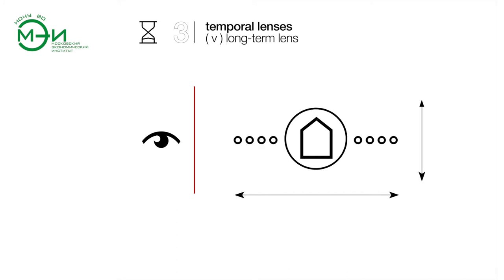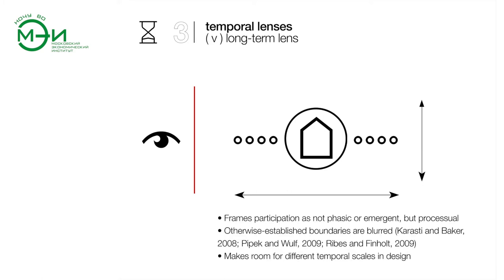Finally, the long-term lens stretches the view of participation — looking back, forward, and to the present — taking into account both the past and the future in the present. This view frames participation as not strictly phasic or emergent, but perceptual, whereby otherwise established boundaries are blurred between design use, implementation, maintenance, redesign, and repair. Whilst this lens represents arguably the biggest research gap of all five lenses owing to its scale and only recent presence in literature, by the same token it carries the most potential in its use and application. Research through this lens makes room for different temporal scales in design. As posited by Dainty, a methodological pluralism can be embraced for the yielding of deeper insights into under-researched sectors, of which architecture live projects abroad is one.